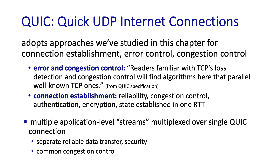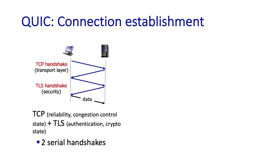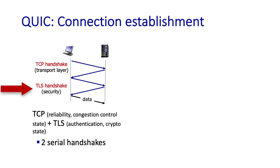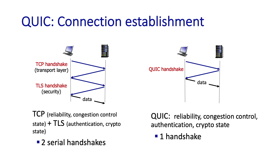We should say a word about QUIC's connection establishment. Like TCP, QUIC is a connection-oriented protocol between two endpoints, and a handshaking protocol is used to set up sender and receiver state for reliability, congestion control, and security. What's currently done in HTTP is that a client first sets up a TCP connection — that takes a full RTT — and then sets up a second connection on top for transport layer security, taking another RTT, so two RTTs are needed before data can begin to flow. At the application layer using UDP, QUIC performs a handshake in just one RTT, setting up reliability, congestion control, and security state all in one handshake.